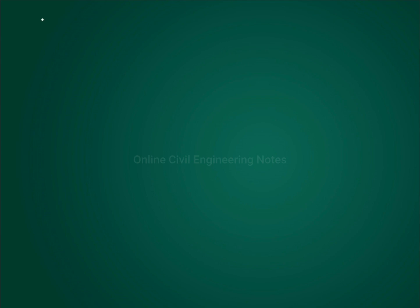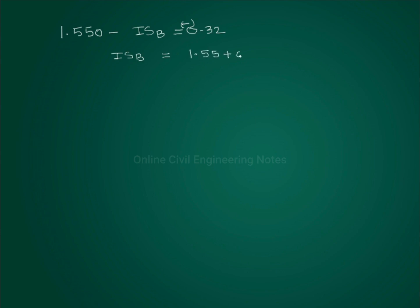Intermediate sight at B was not given. The difference of staff readings at A and B is equal to 0.4, so back sight reading at A is 1.550 and intermediate sight at B is 0.320, and it is a fall — so take this value as negative. Therefore, intermediate sight at B is equal to 1.550 plus 0.320, which equals 1.870 meters.